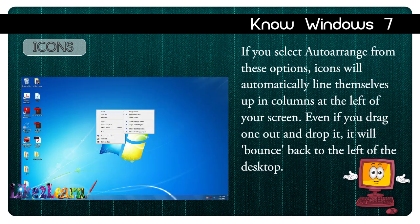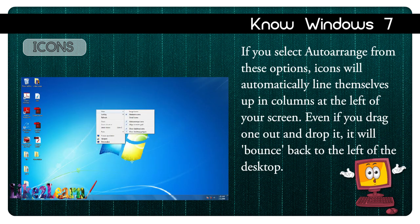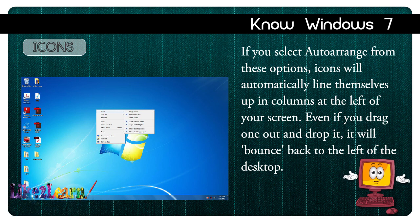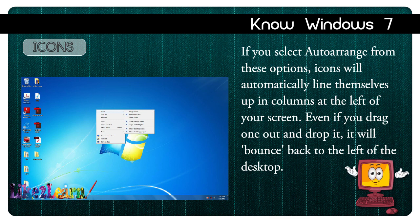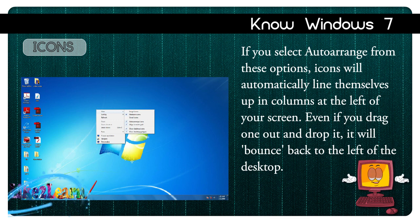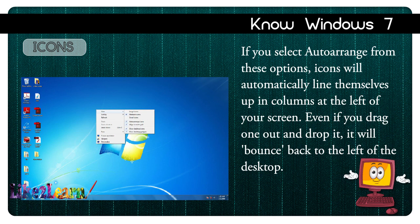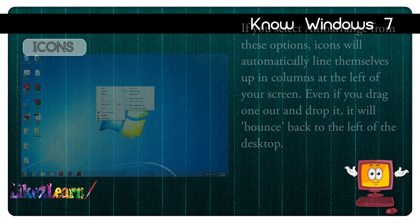Wow fact: you can give a 3D effect to your desktop by holding the Windows key and pressing the Tab key. If you select Auto Arrange from the options, icons will automatically line themselves up in columns at the left of your screen. Even if you drag one out and drop it, it will bounce back to the left of the desktop.